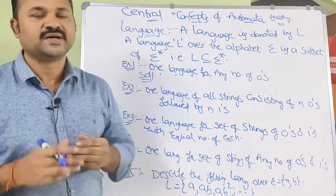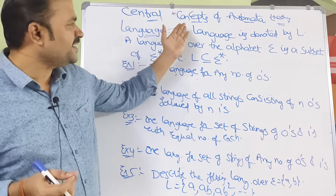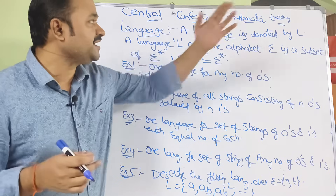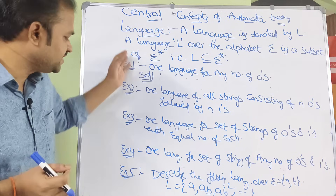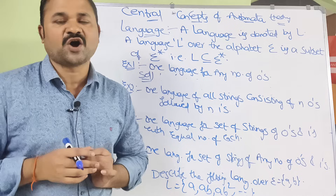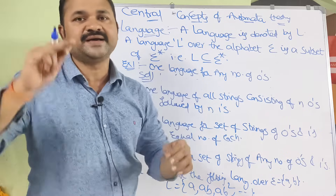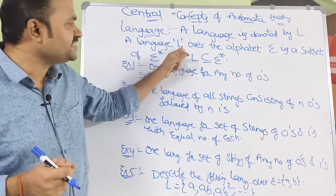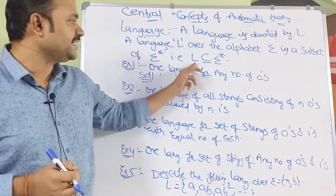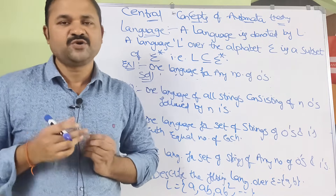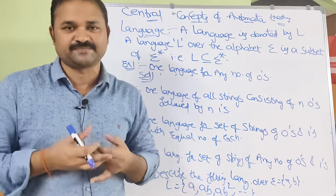Let us discuss language in Theory of Computation. Language is a basic or central concept in automata theory. The definition: a language L over the alphabet sigma is a subset of sigma star, that is L ⊆ Σ*. Sigma star contains the set of strings of any length.